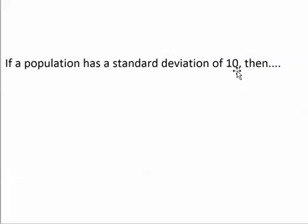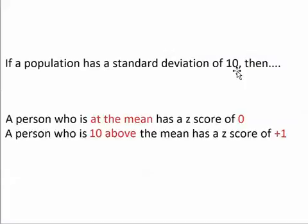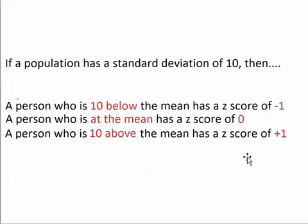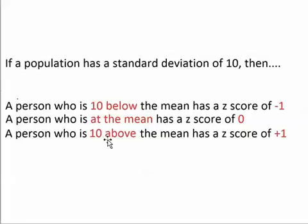If the standard deviation of the class was 10, then a person who is 10 above the mean would be one standard deviation above the mean and that student would have a z-score of plus 1. And a student who is 10 below the mean would be one standard deviation below the mean and would have a z-score of minus 1. For example, if the mean of the class was 70, then a student right at 70 has a z-score of 0. A student with a score of 80, which is 10 above the mean, has a z-score of plus 1, and a student with a score of 60, which is 10 below the mean, has a z-score of minus 1.